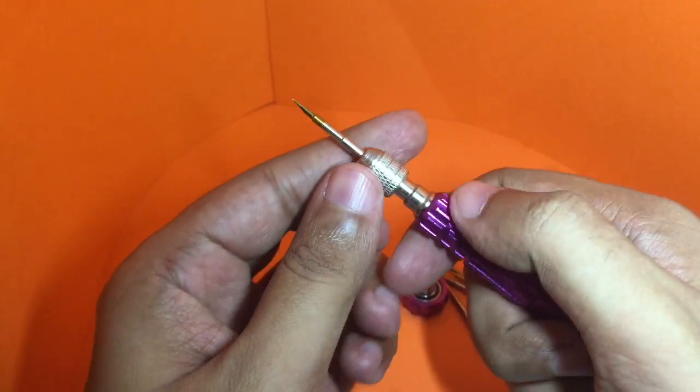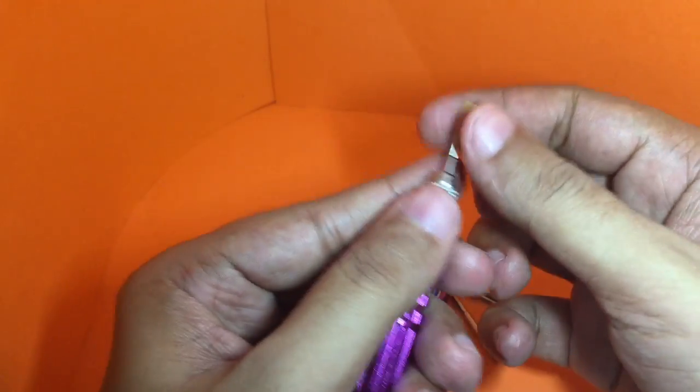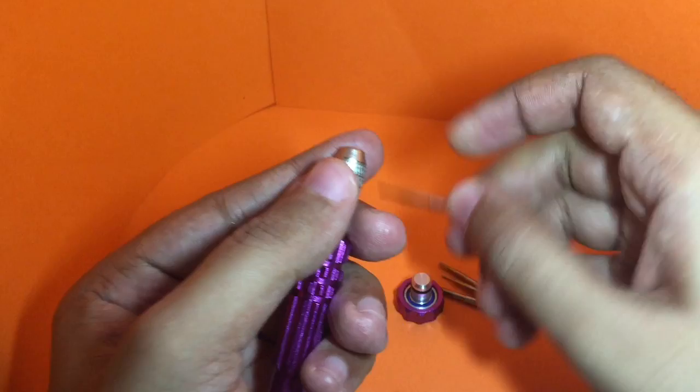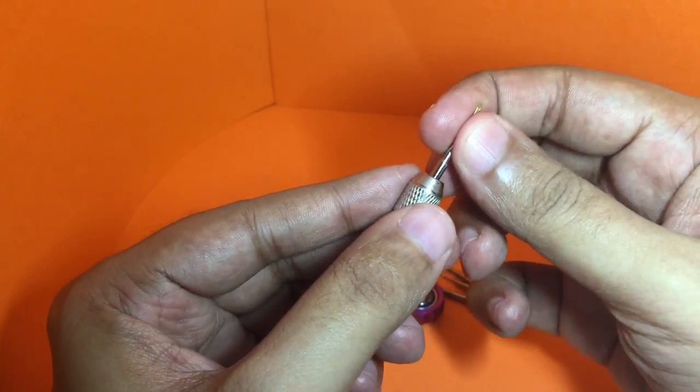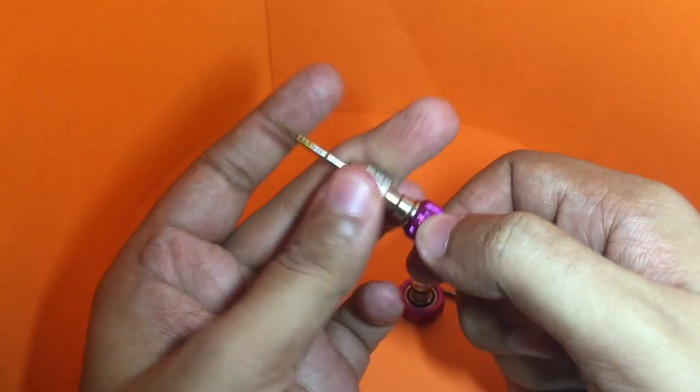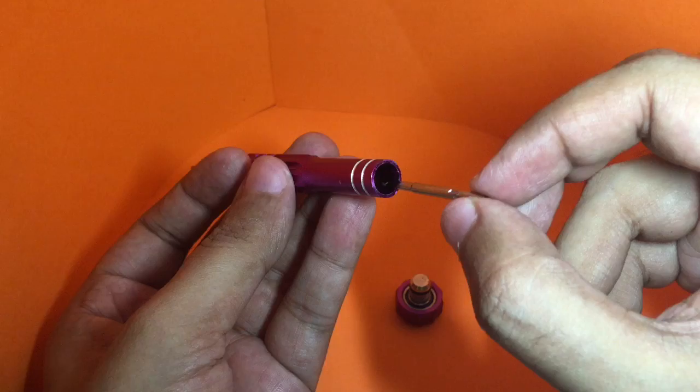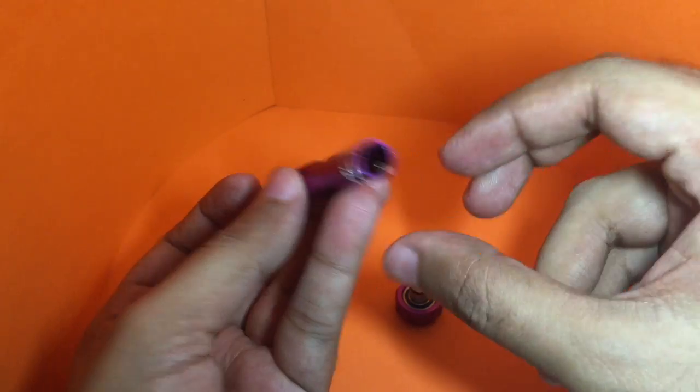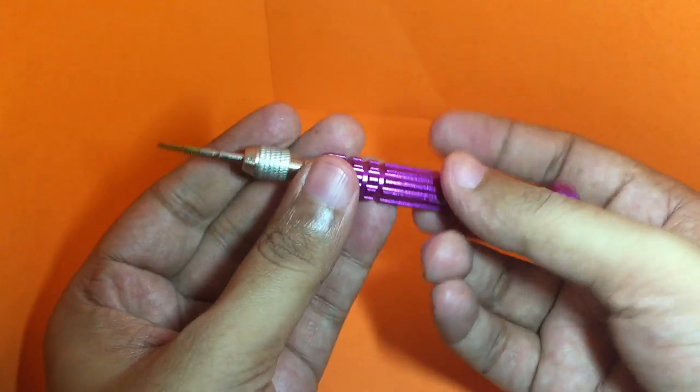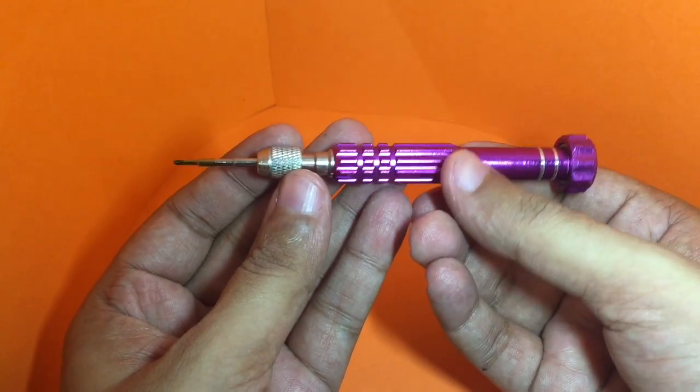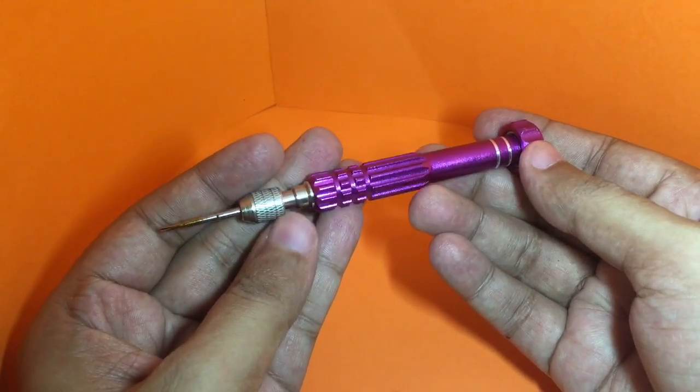To change the tip, all you need to do is loosen this up, remove it, and change to a different tip. Store the remaining bits away, put the cap back on, and you're good to go. This tool also comes in surprisingly many colors.